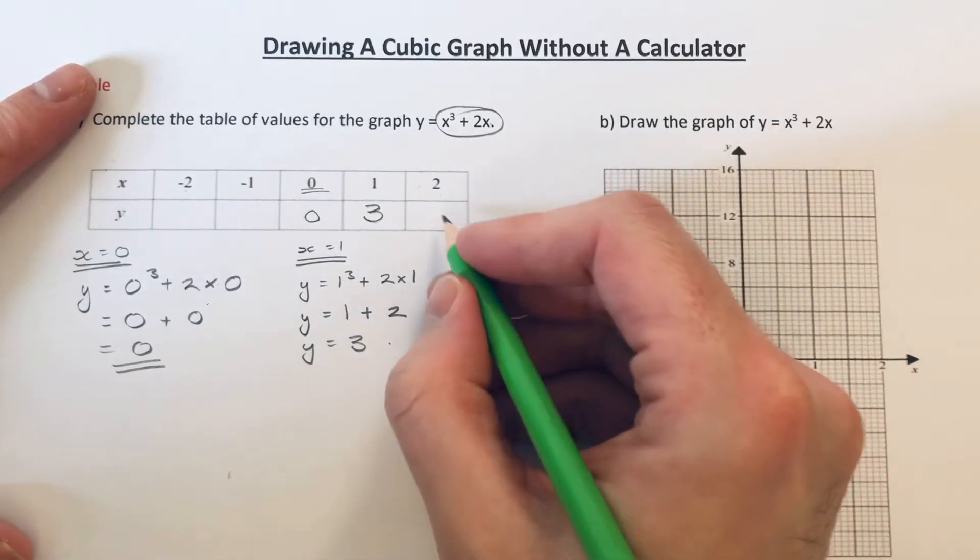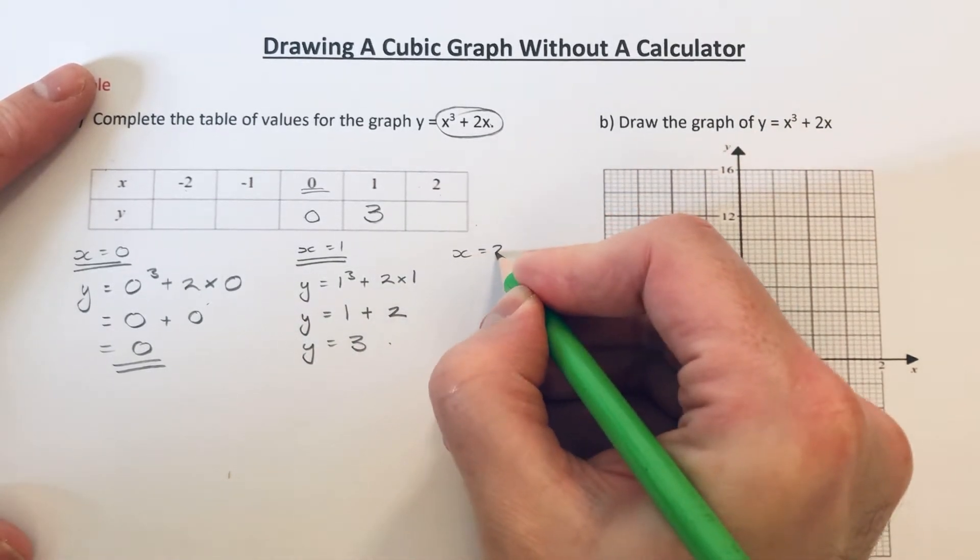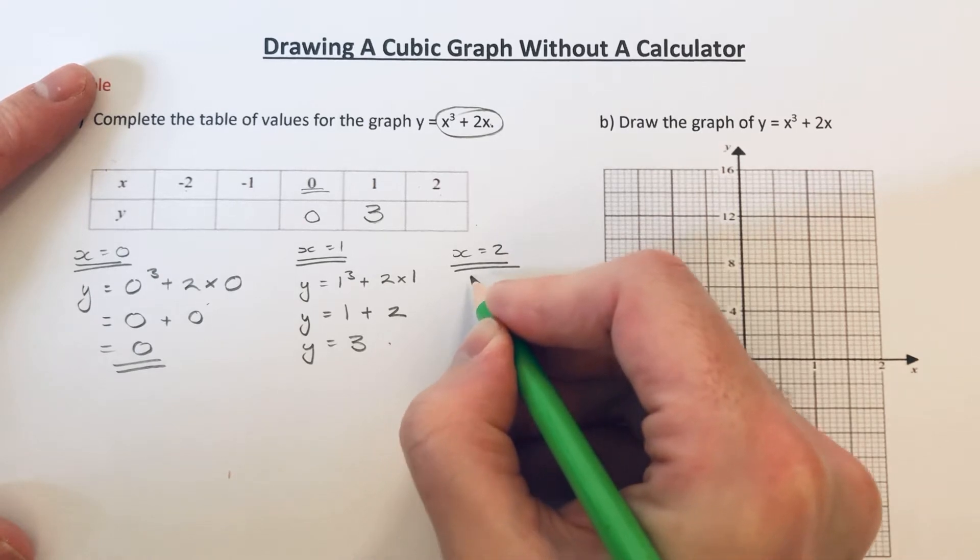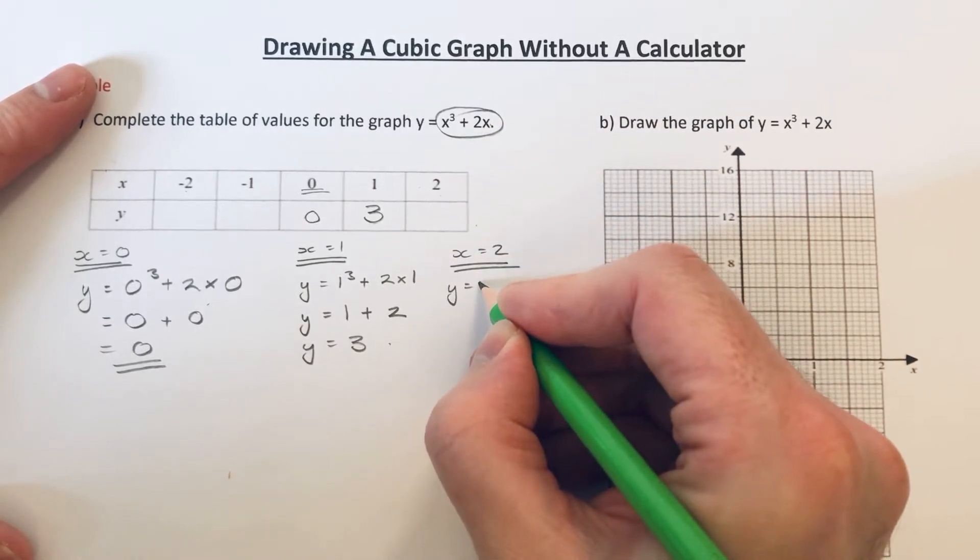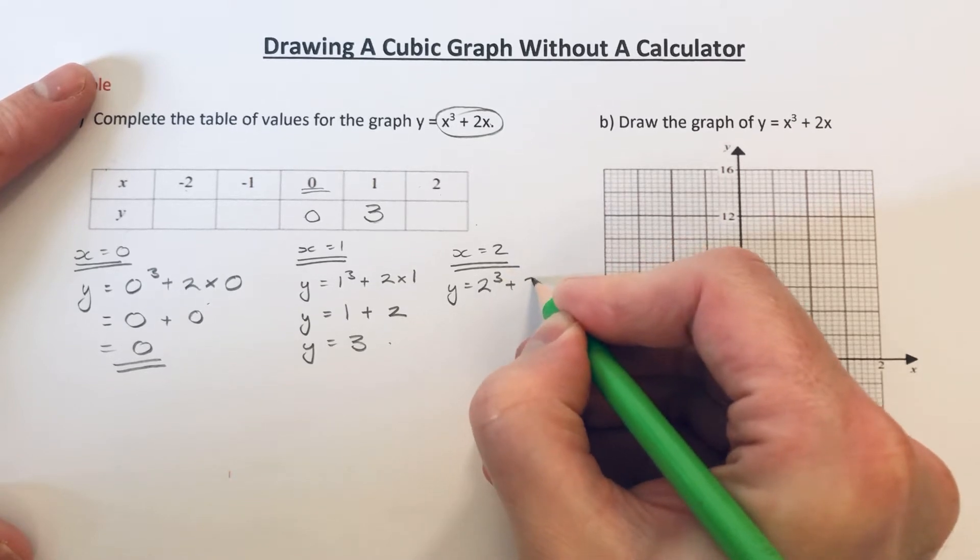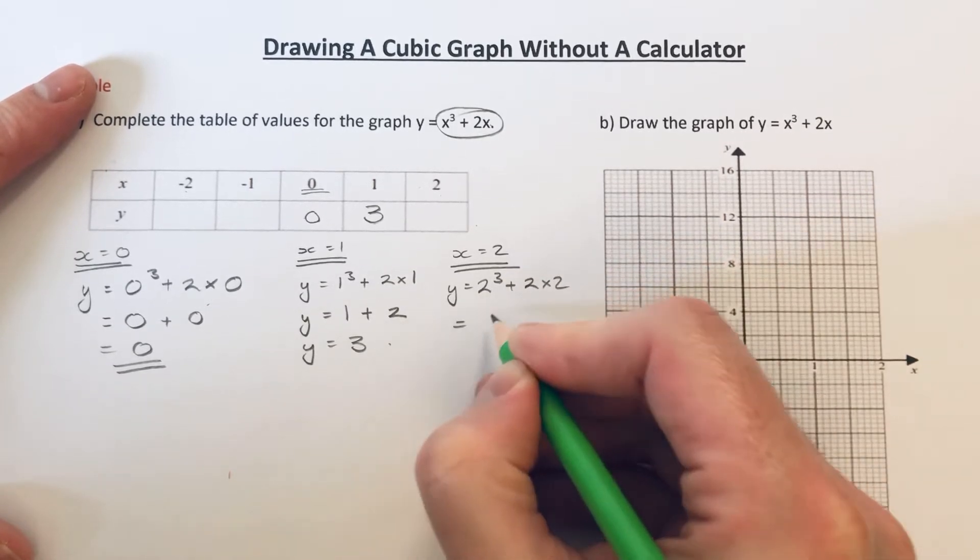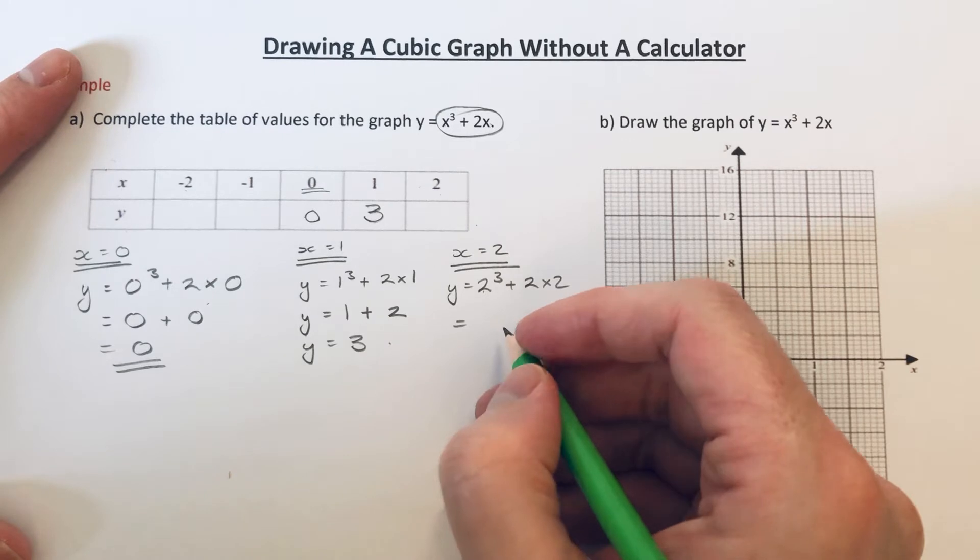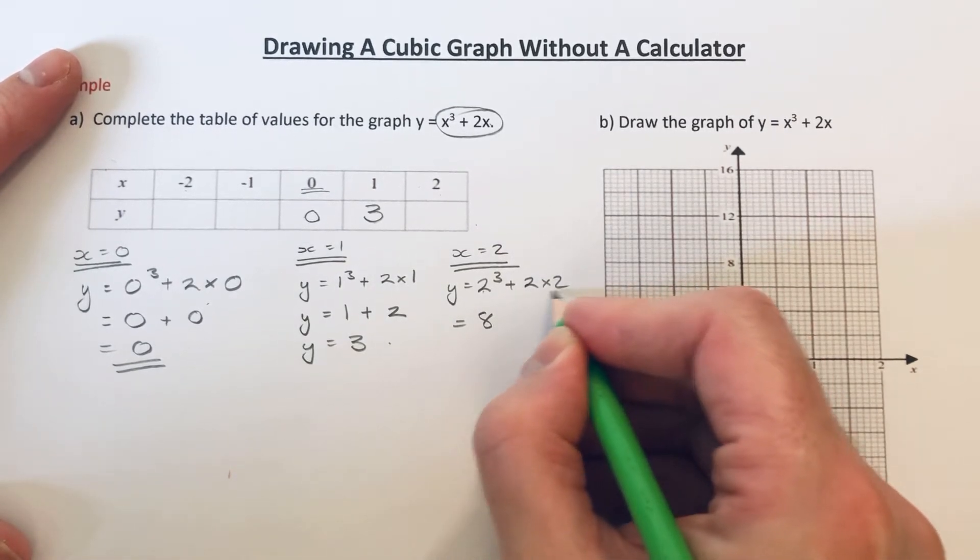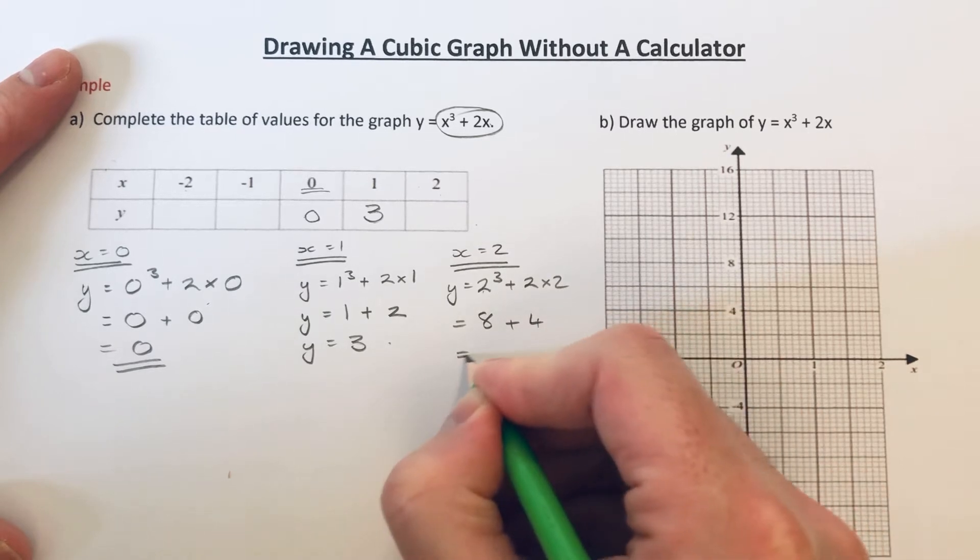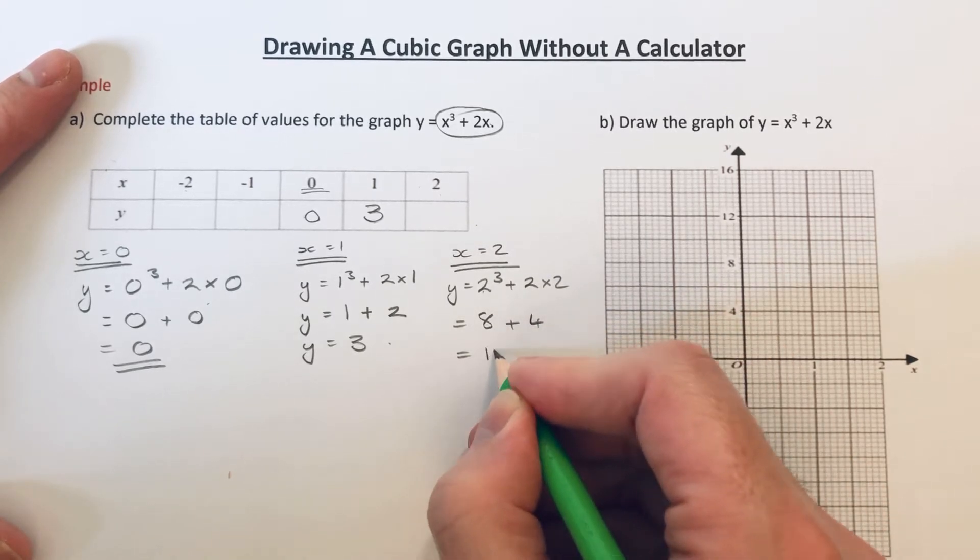So let's do x equals 2 next. So again, we substitute it into the expression. So it would be 2 cubed plus 2 times 2. So 2 cubed is 2 times 2 times 2, which is 8. 2 times 2 is 4. So 8 add 4 is 12.